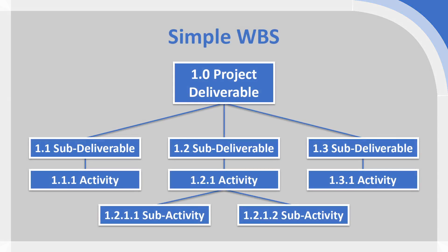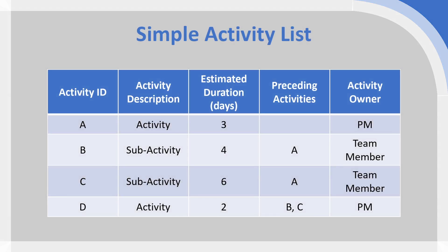We have a work breakdown structure here leading to a single project deliverable, and we have four specific activities which go into our activity list because they are the four activities at the lowest level of each branch. We're going to label those activities A, B, C, and D. From our activity list we have estimated durations for each activity in days: three, four, six, and two days. We also have preceding activities as well.